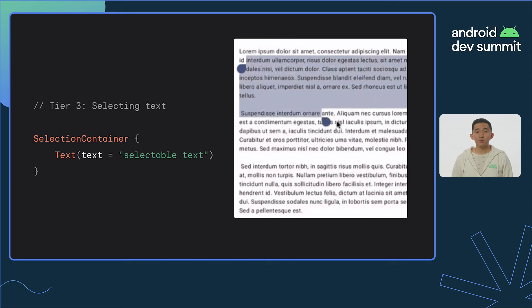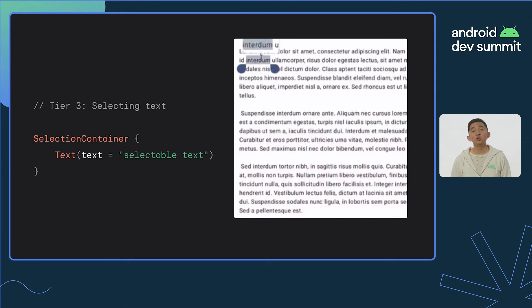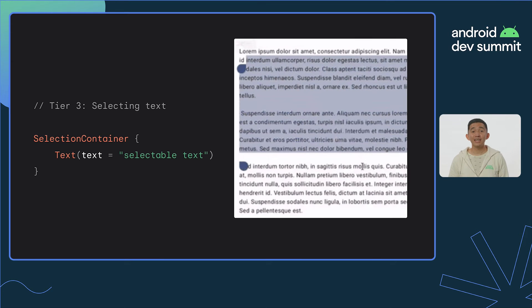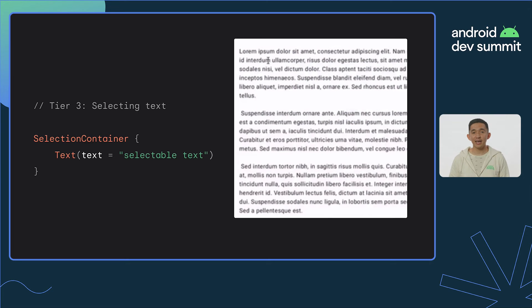To create a more native feel for mouse users within your app, it's good practice to make relevant text selectable. At Google, we've done a lot of the work for you to accomplish this. To enable text selection for a block of text, you can wrap the element within a SelectionContainer composable. In this code snippet, we've wrapped our text object in a SelectionContainer. Now, the Android framework will handle the rest for us to enable users to select and copy this text.